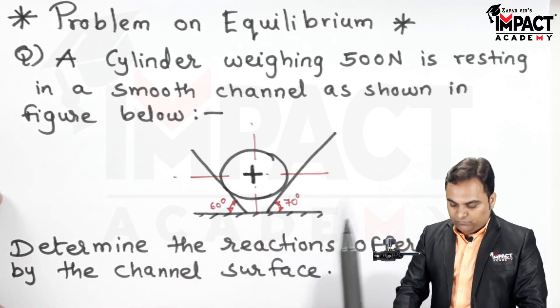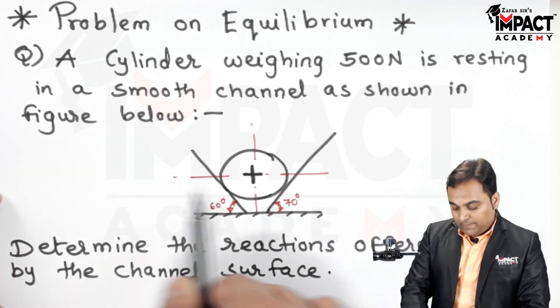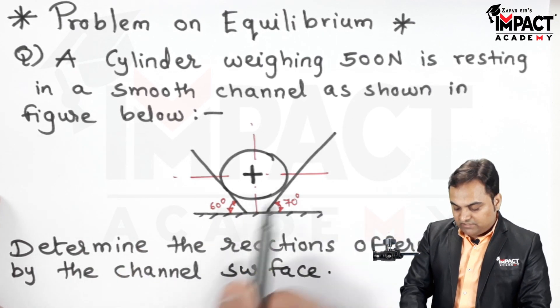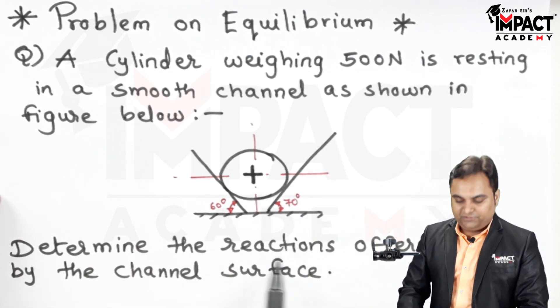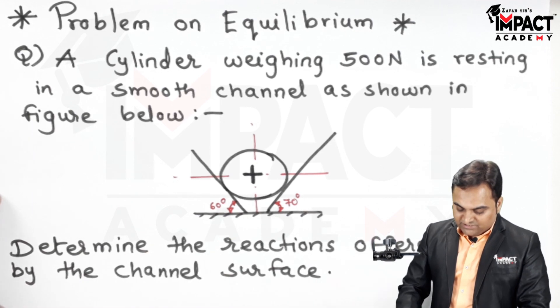Here there is a cylinder which is kept between a channel and these planes are inclined at 60 degree and 70 degree. Since they are smooth there is no coefficient of friction present. Determine the reactions offered by the channel surface.